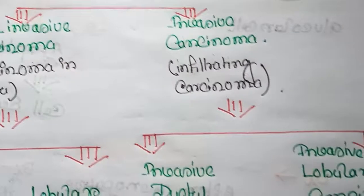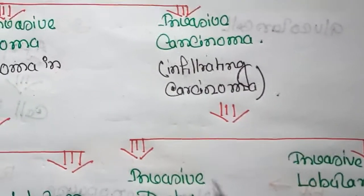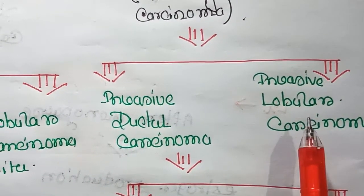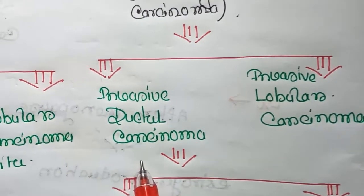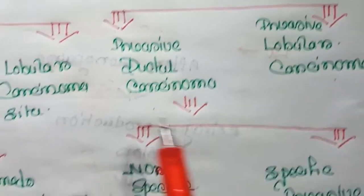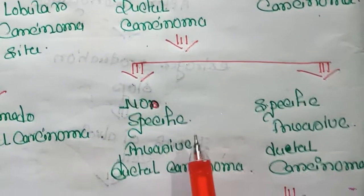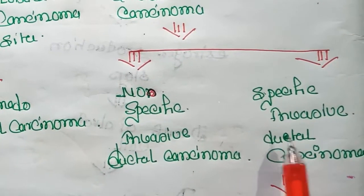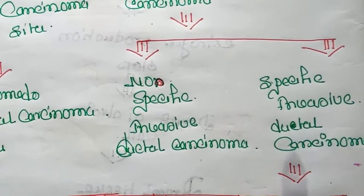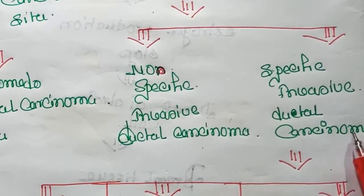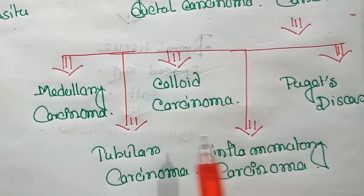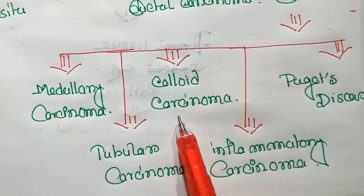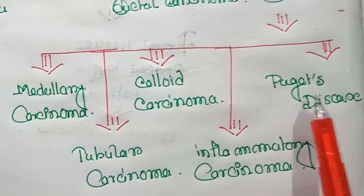Invasive carcinoma, or infiltrating carcinoma, is divided into two types: invasive ductal carcinoma and invasive lobular carcinoma. Invasive ductal carcinoma is also divided into two types: non-specific invasive ductal carcinoma and specific invasive ductal carcinoma. The specific invasive ductal carcinoma may further be divided into medullary carcinoma, tubular carcinoma, colloid carcinoma, inflammatory carcinoma, and Paget's disease.